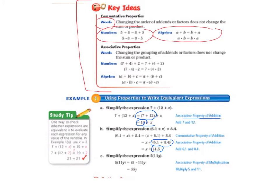Finally, we're going to simplify the expression 5 times 11y. We use the associative property of multiplication — we expand this to 5 times 11 times y. 5 times 11 equals 55, so we stick the y on the end and our simplified expression is 55y.